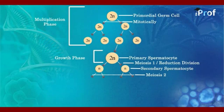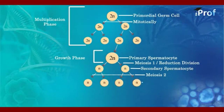This forms haploid cells. These cells are known as spermatids. These spermatids are haploid cells, and this process is called the maturation phase.